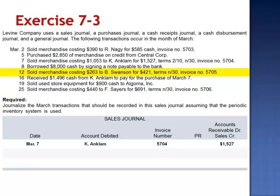March 12th: sold merchandise costing $2,630 to Swanson for $4,210, terms net 30, invoice number 5705. This transaction is recorded in the sales journal: the date of March 12th, the customer's name Swanson, invoice number 5705, and the amount of the sale, $421.